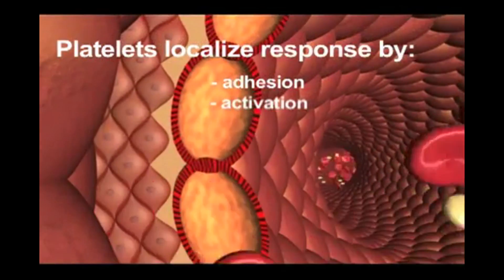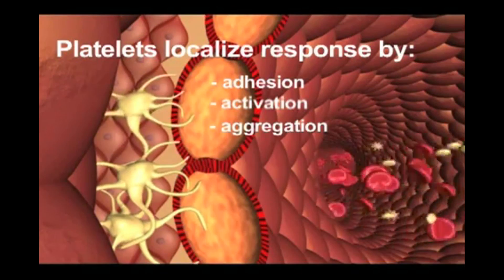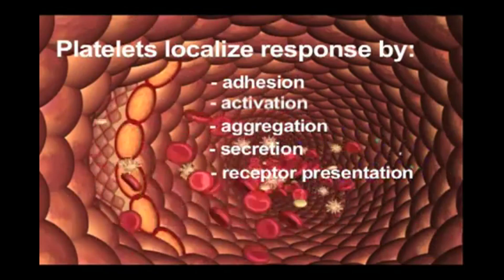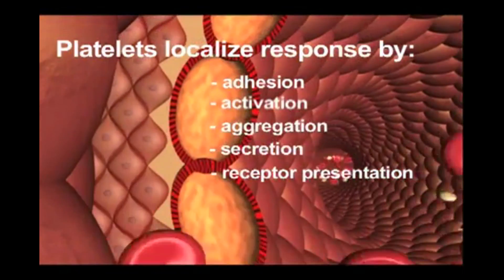Platelet adhesion, activation, aggregation, secretion, and receptor presentation serve to localize the blood coagulation process to the region of vascular damage.